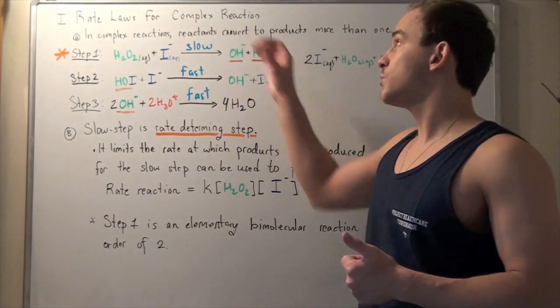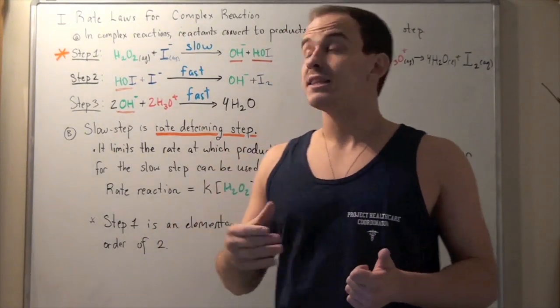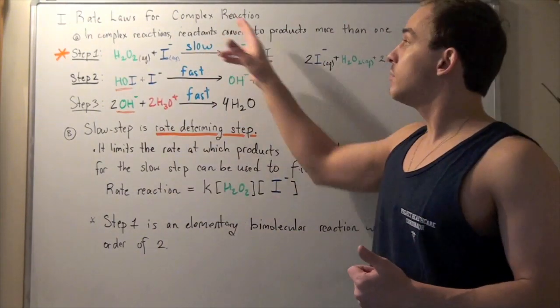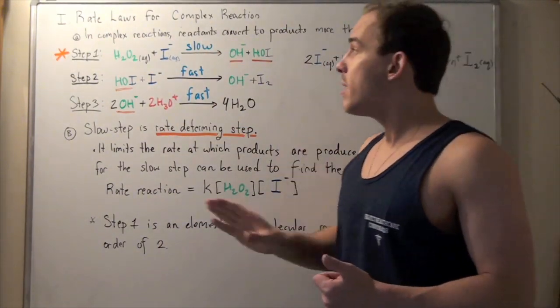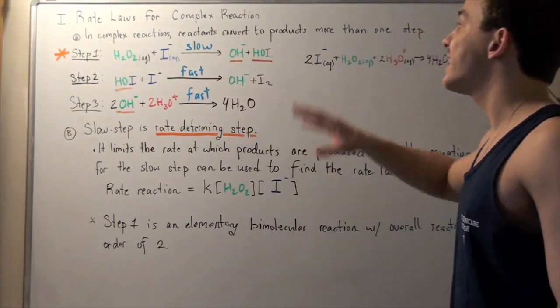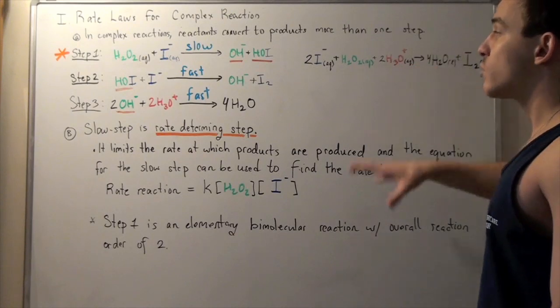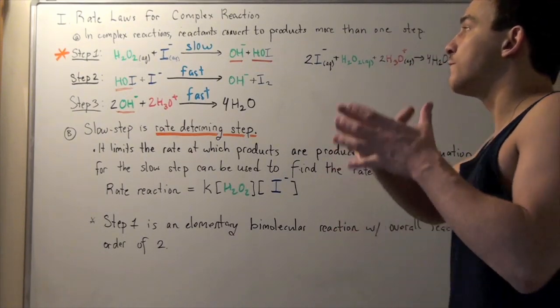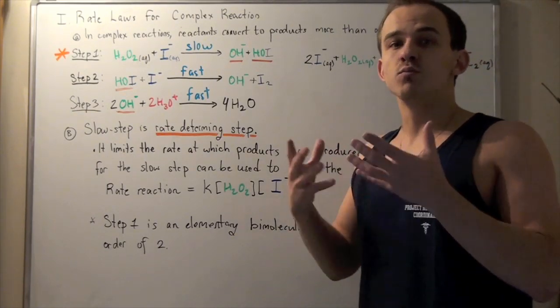Now, we're going to look at complex reactions, and we're going to find the rate laws for complex reactions. Remember, in complex reactions, reactants convert to products in more than one step. So, the mechanism of our conversion will require more than one step.